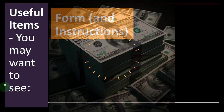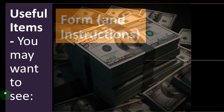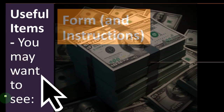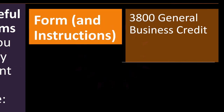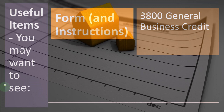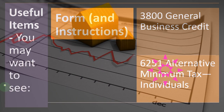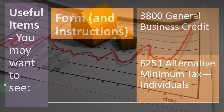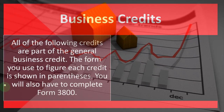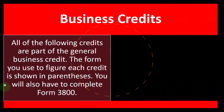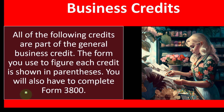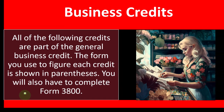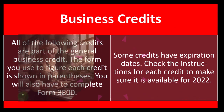Whereas a deduction will decrease your income, which will result in a benefit based on your tax rates. Useful items you may want to see: Form 3800, General Business Credit; and Form 6251, Alternative Minimum Tax for Individuals — both available on the IRS website. All the following credits are part of the general business credits. The form used to figure each credit is shown in parentheses, and you will also have to complete Form 3800.